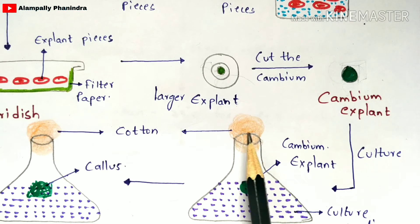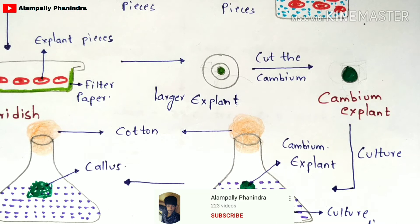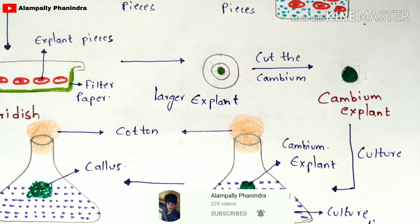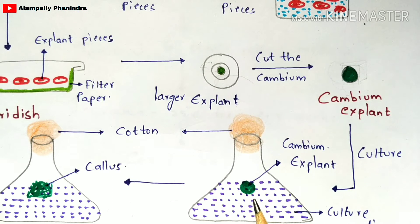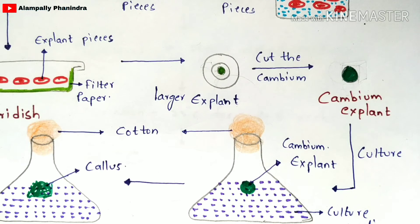Immediately after adding the cambium explant to the culture medium, close the test tube with cotton. This is to prevent the entry of harmful pathogenic bacteria into the test tube, since the environment contains both positive and negative pathogenic bacteria.